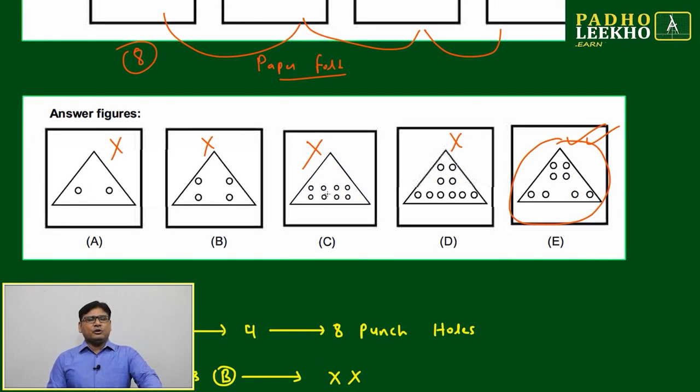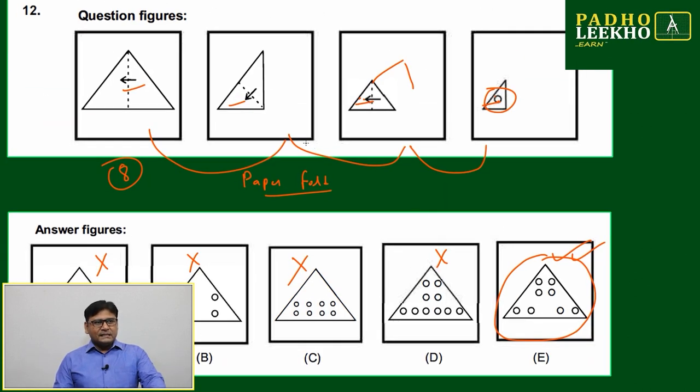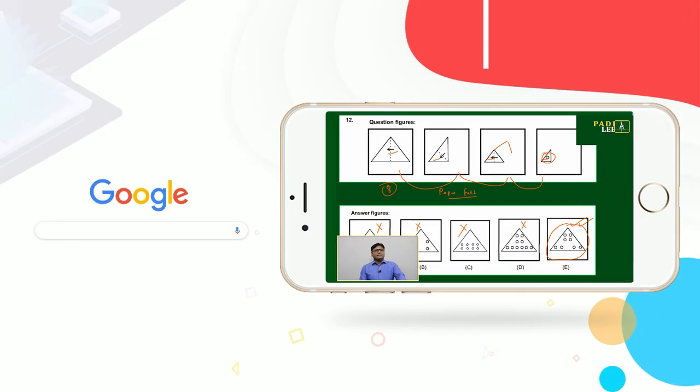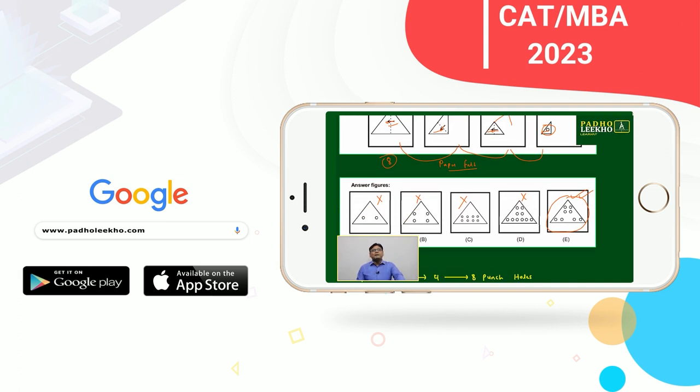C cannot be possible because all holes are coming in one line, and folding is not happening in the same line. Folding is always happening at 90 degrees: one is this direction, another this direction, another is this direction. Due to this, holes will never be in the same line, so C is also not possible.